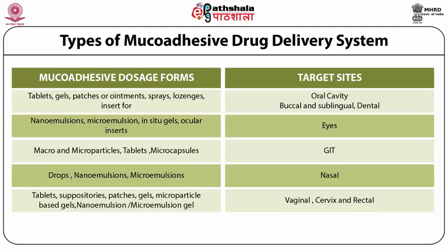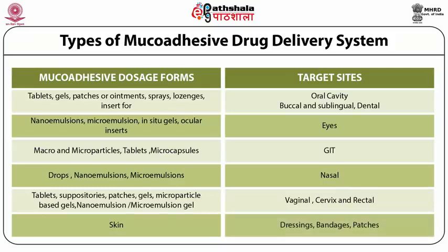The key point is that one of the ingredients, polymers, or excipients must essentially be able to provide mucoadhesion. On the skin, dressings, bandages, and patches are the chosen dosage forms.